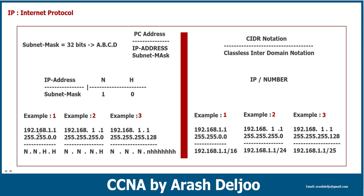Let me show you three examples. Example one: 192.168.1.1 with subnet mask 255.255.0.0 — this means the first two octets are the network part and octets three and four are the host bits. Example two: 192.168.1.1 with subnet mask 255.255.255.0 — the first three octets are network bits because the subnet mask has the value 255.255.255, and the last octet is the host bit.